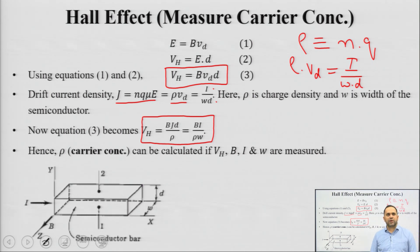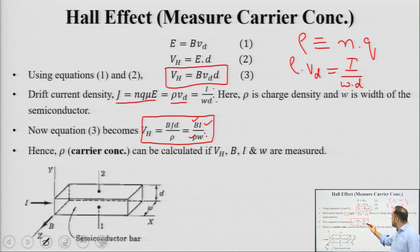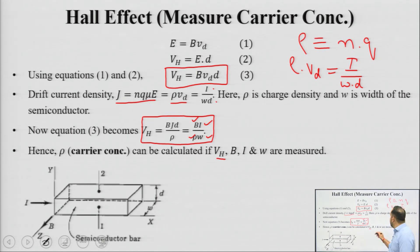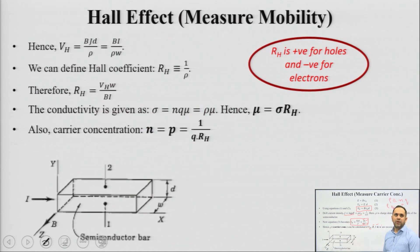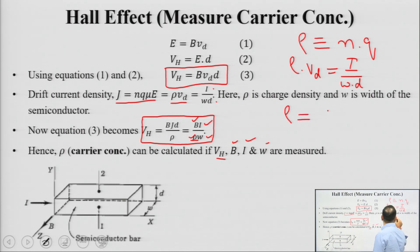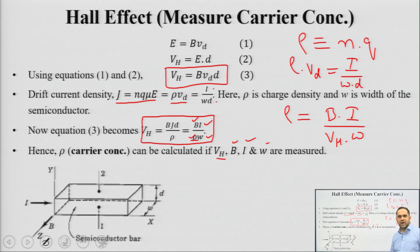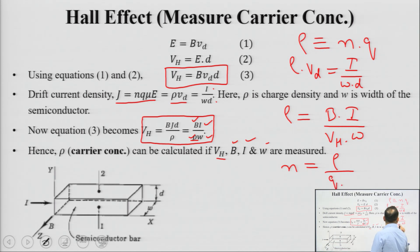Hall voltage depends upon the magnetic field intensity applied, the current I flowing through the semiconductor, the charge density in the semiconductor, and the width. If you measure Hall voltage v_h using a voltmeter across region one and two, and you know the magnetic field, current, and physical dimensions, you can calculate charge density ρ = B·I / (v_h·w). From charge density you can calculate carrier concentration, applicable to both n-type and p-type semiconductors.